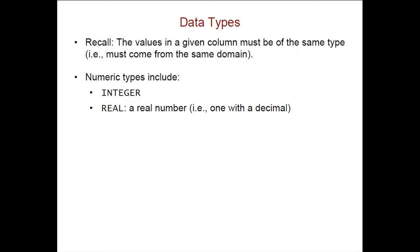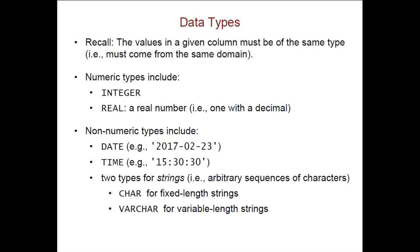The numeric types include one for integers and one for real numbers. For non-numeric data there's a date type, a time type, and then two different types for arbitrary sequences of characters which are known in computer science as strings. And we're going to talk about both of those now in more detail.